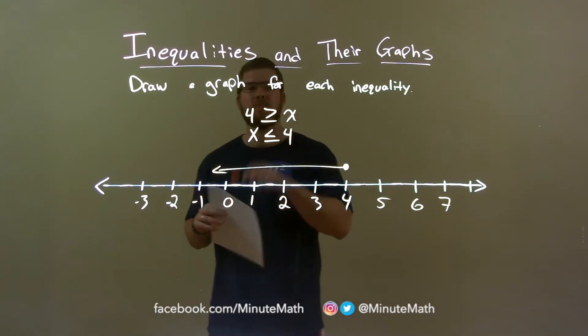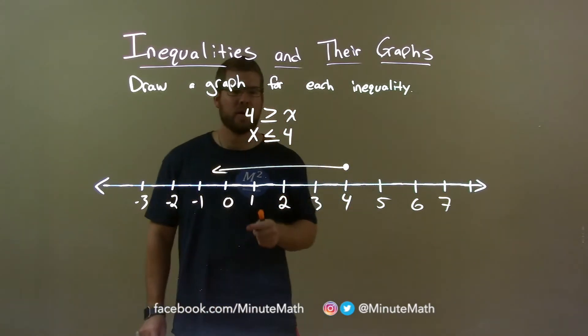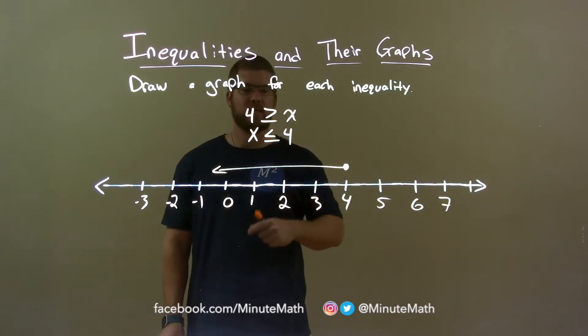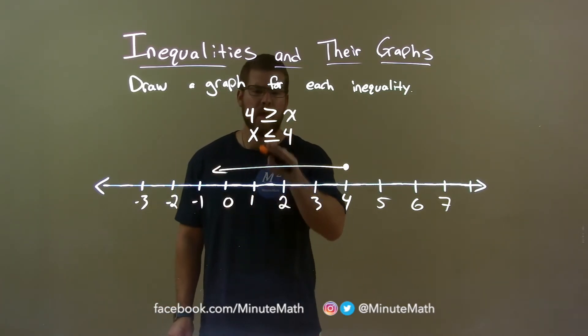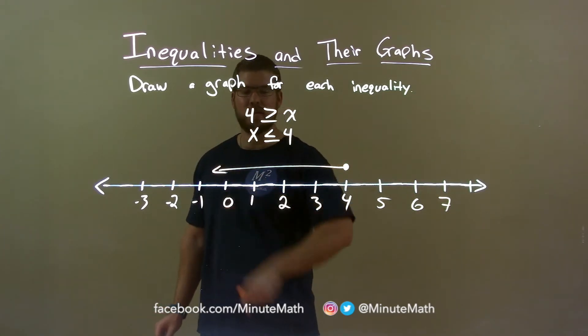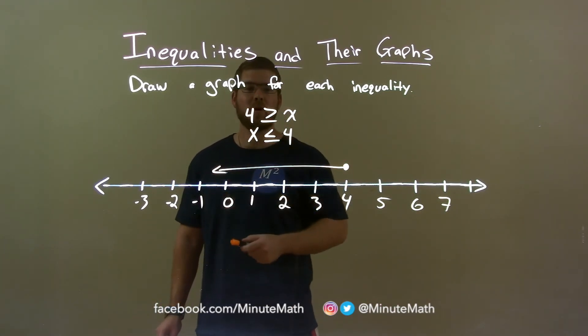Quick recap, we're given 4 is greater than or equal to x and we need to graph that inequality. Flip that to have x is less than or equal to 4. It means the same thing. Equal to, closed circle at 4, x is less than, shaded to the left and there we have our final answer for 4 is greater than or equal to x.